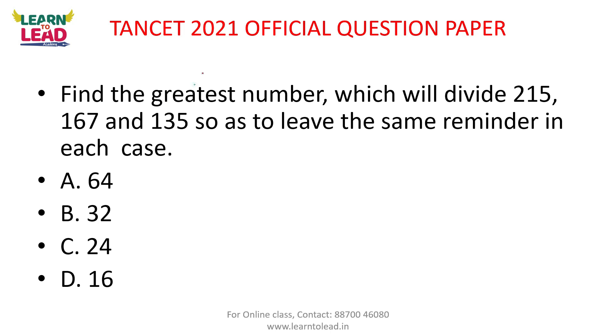Greatest number — let's see what happens. Normally, find the greatest number which will divide 215, 167, and 135. In that case, we find the HCF.